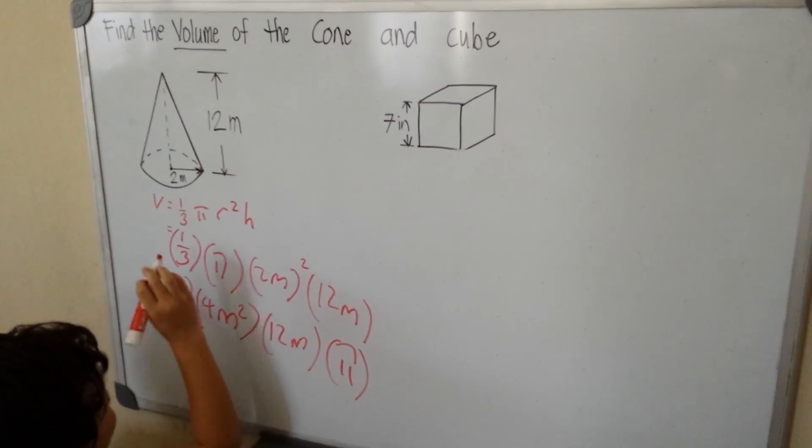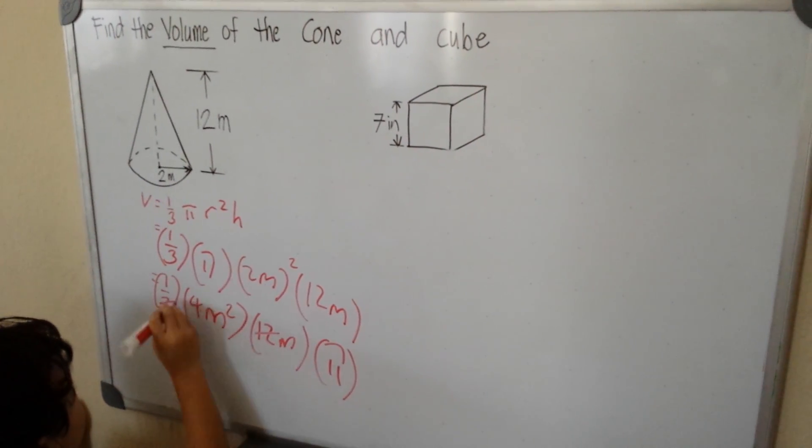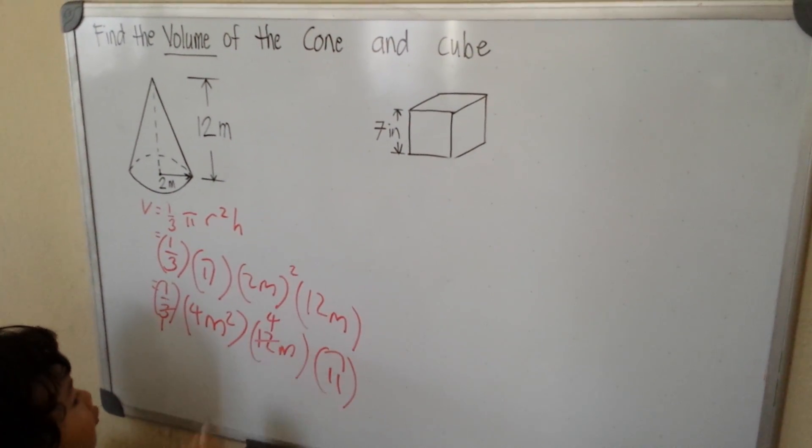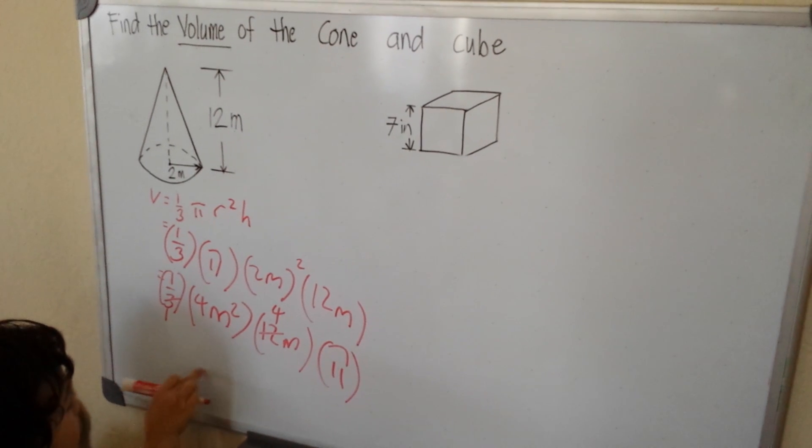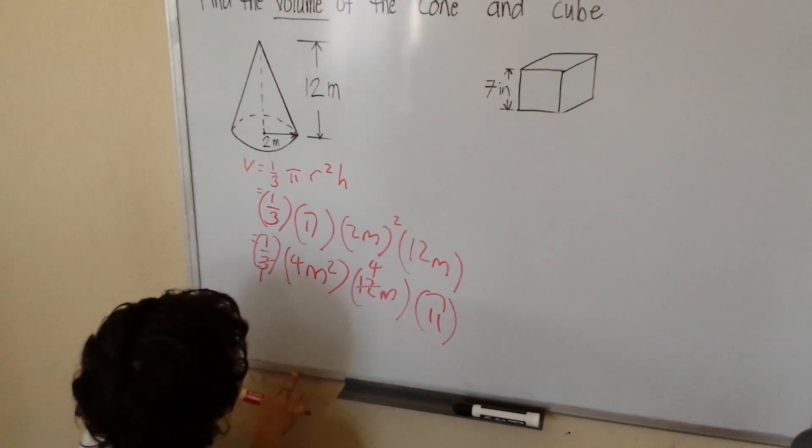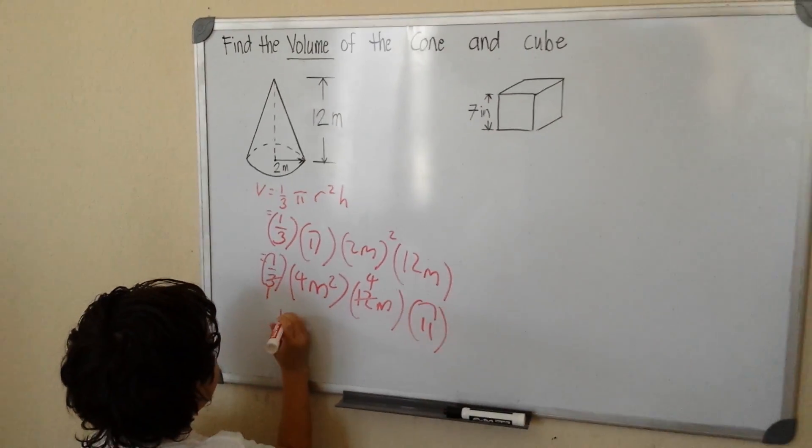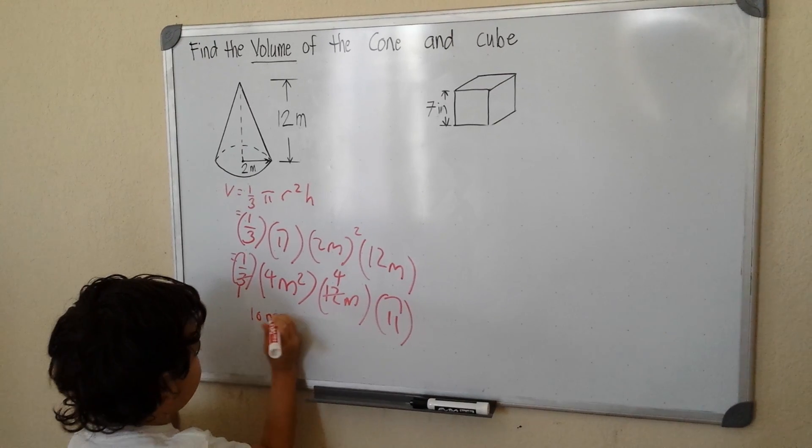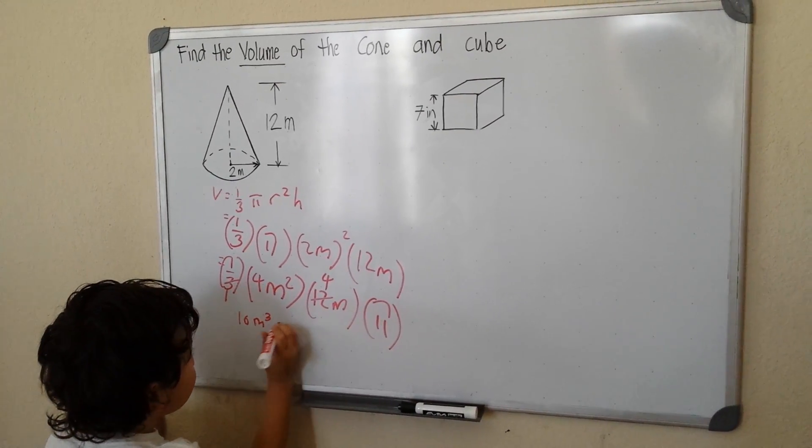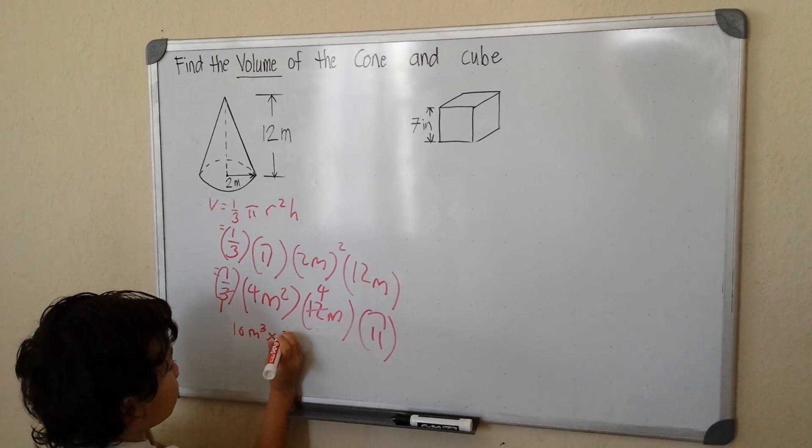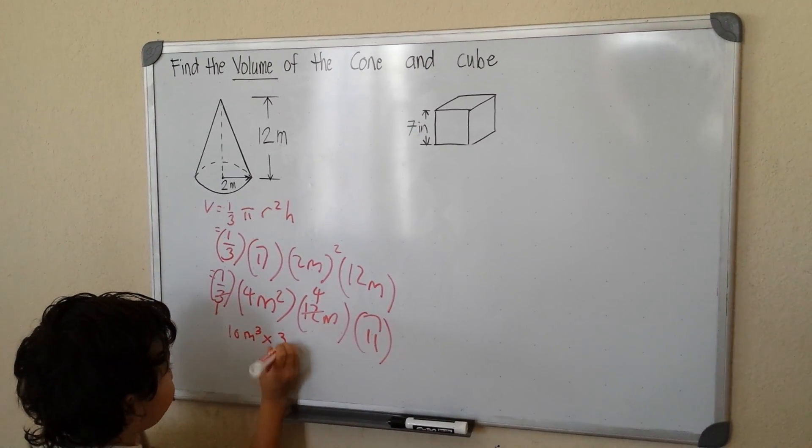Now I will cancel these up, and then this became 1, and this became 4. So 1 times 4, that becomes 4 times 4, that becomes 16, 16 meter cube, and then pi, 3.14.